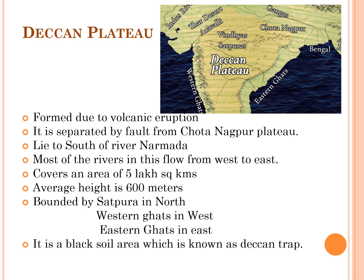The Deccan Plateau is formed due to volcanic eruption and it is separated by a fault from the Chotanagpur Plateau. It lies towards the south of the River Narmada, covering most of central and southern India. Its average elevation is almost 600 meters and it covers an area of 5 lakh square kilometers. It is bordered by the Western Ghats in the west, Eastern Ghats in the east, and the Satpura range in the north. Most of the rivers in the Deccan Plateau flow from west to east. River Godavari and its tributaries irrigate the northern areas, River Krishna and its tributaries and River Tungabhadra irrigate the middle regions, and the southernmost region is irrigated by River Kaveri. It is a black soil area known as the Deccan Trap.